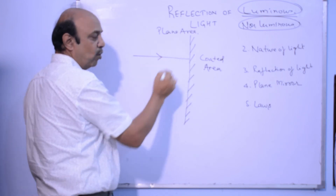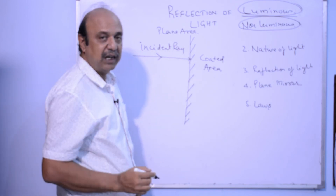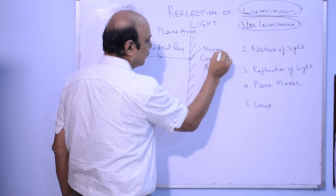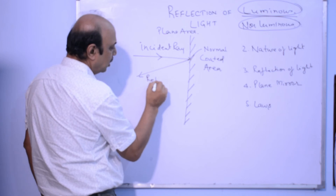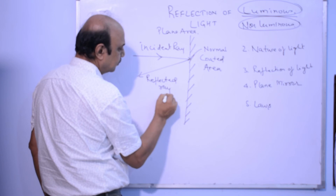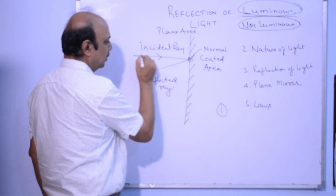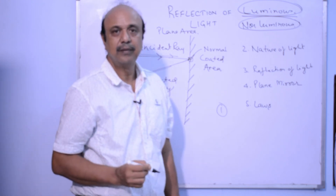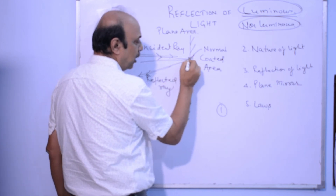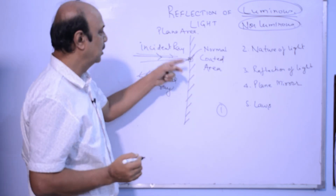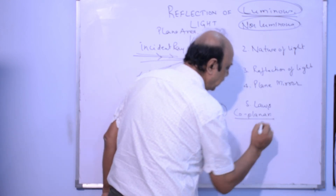The light coming from the source onto the mirror is called the incident ray. The point where it hits the mirror is called the point of incidence, and the perpendicular drawn at that point is the normal. The light that rebounds is called the reflected ray. The first law of reflection says that the normal, the incident ray, and the reflected ray are co-planar — that means they lie in the same plane.